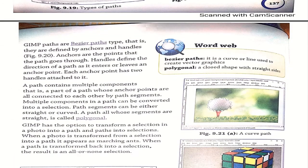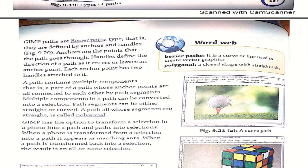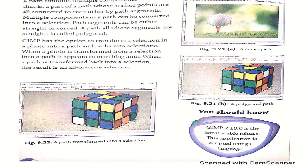GIMP paths are Bezier paths. A Bezier path is a curve or line used to create vector graphics. Anchors are the points that the path goes through. Handles define the direction of the path as it enters or leaves an anchor point. A path contains multiple components, and path segments whose segments are all straight are called polygonal. GIMP also has the option to transform a selection into a path and paths into a selection. This concludes our lesson on GIMP.